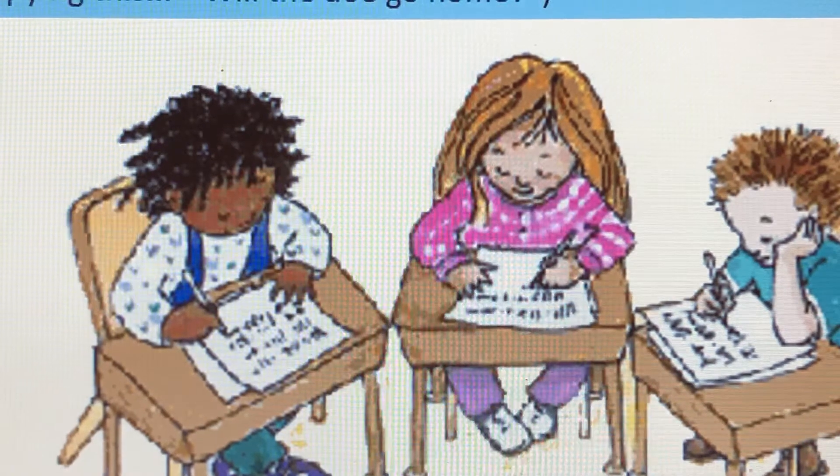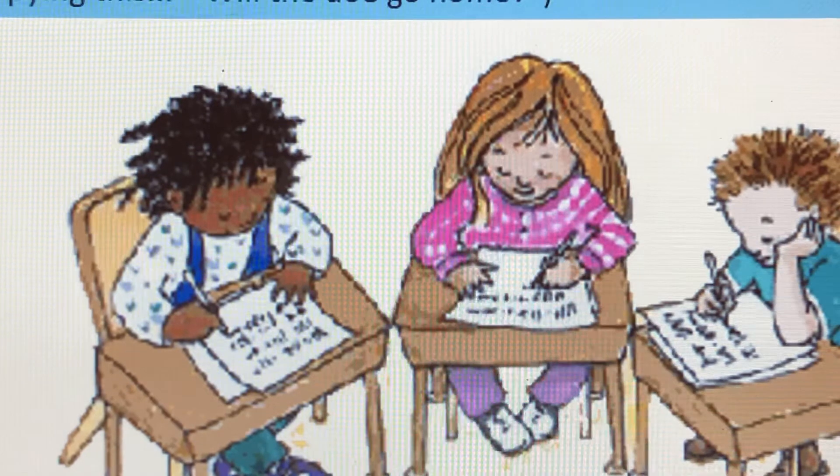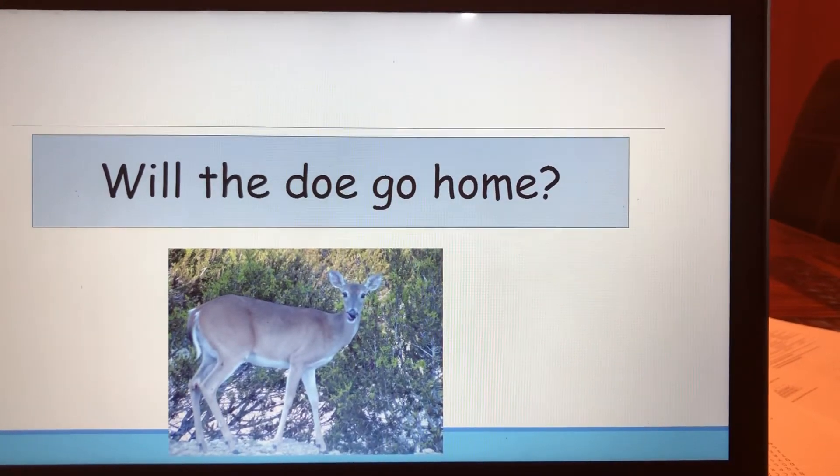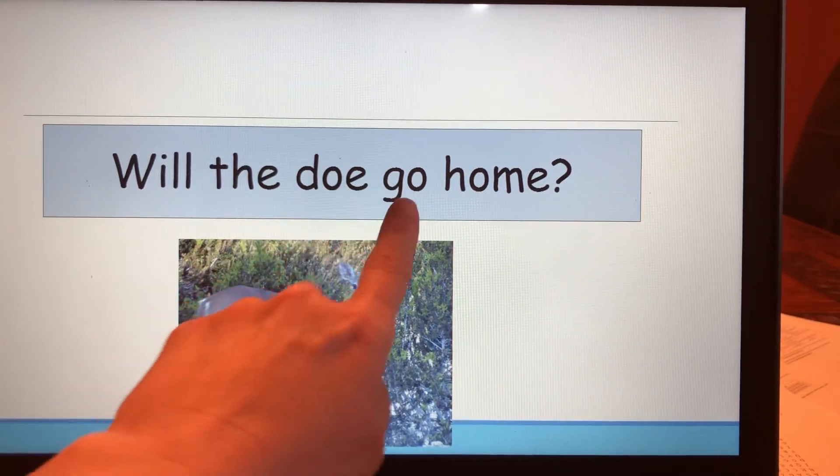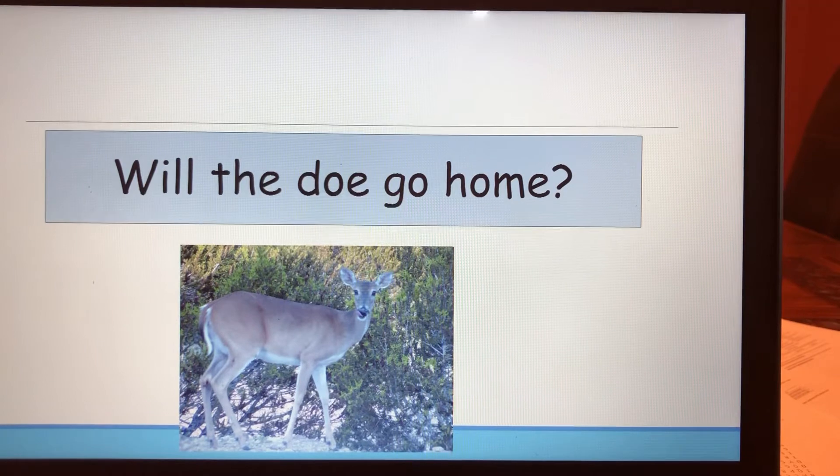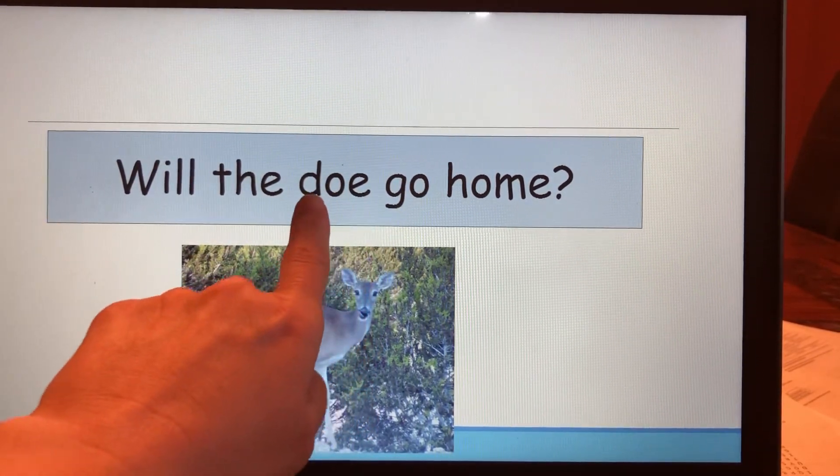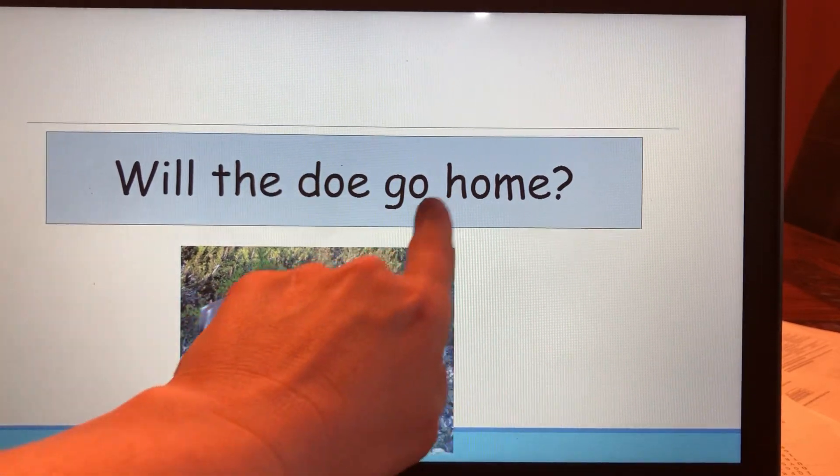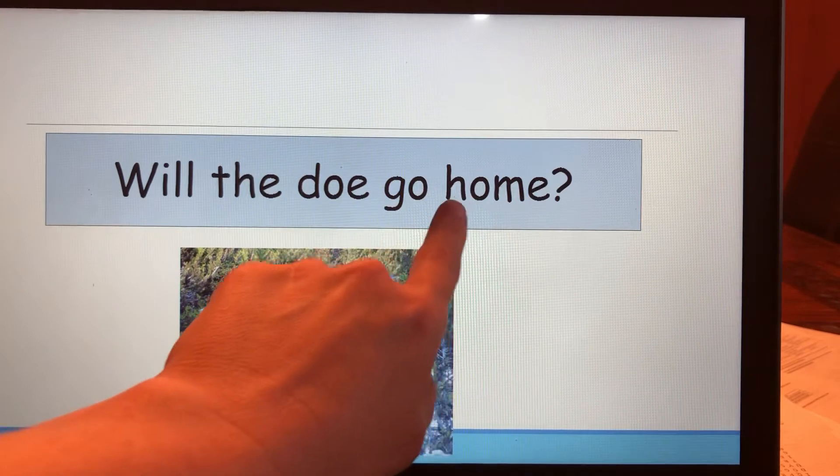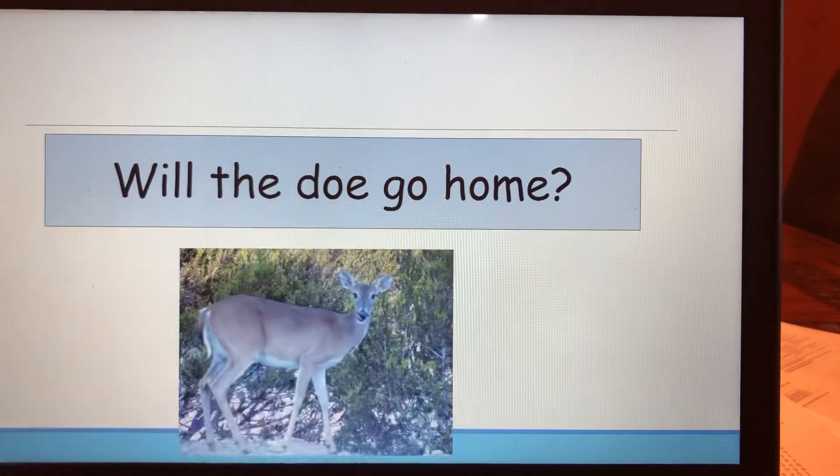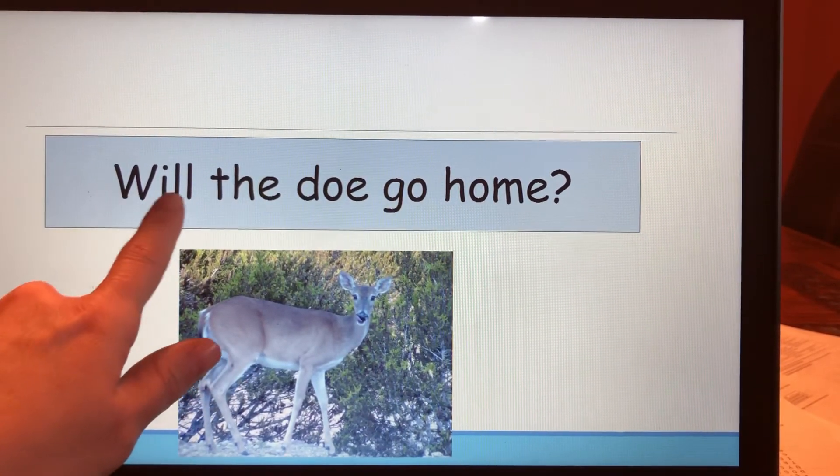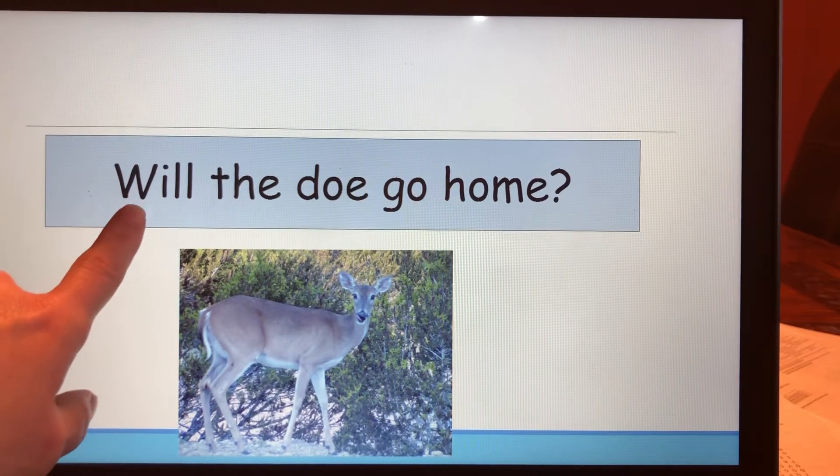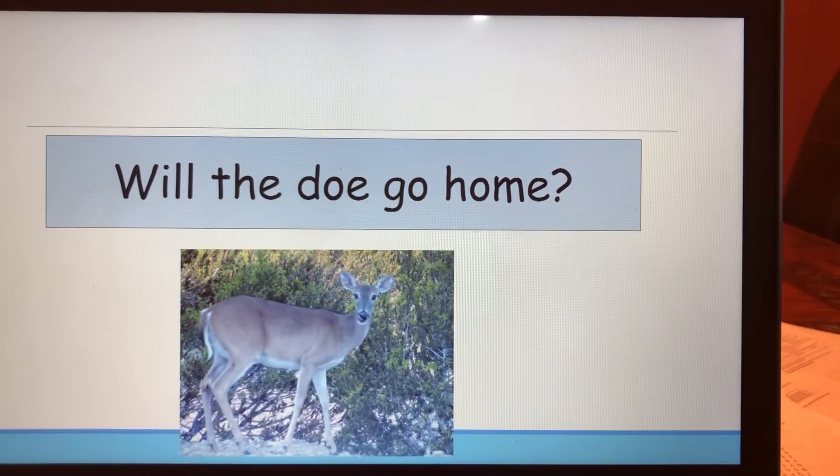Why don't you pause the video and write the sentence. Then when you are ready, start the video up again and check your work. Did you get it? Let's take a look. Will the doe go home? There's some tricky words in this sentence. First of all, we have the word doe, so we had to remember that doe uses the digraph we just learned: OE. And also the word home has our sneaky E, our silent E that we don't hear. So home is spelled H-O-M-E. Will is a little bit tricky. We've been practicing it for a long time, but it does have two L's. And a couple other things for you to check. Did you start your sentence with a capital W? Did you end your sentence with a question mark? Good job, good job.